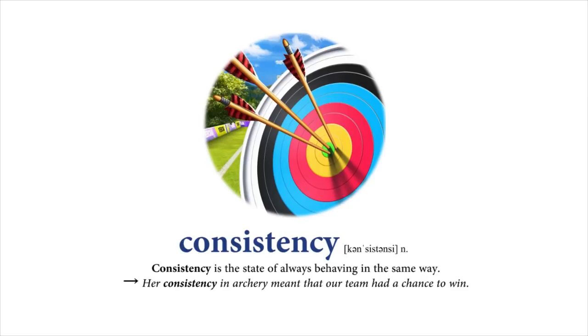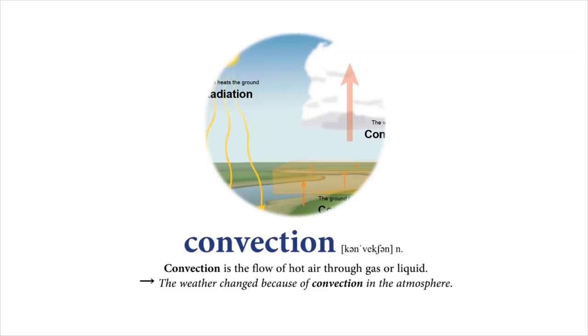Convection: Convection is the flow of hot air through gas or liquid. The weather changed because of convection in the atmosphere.